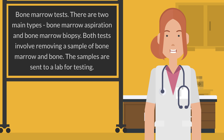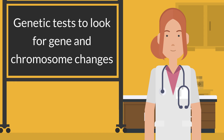Bone marrow tests include two main types: bone marrow aspiration and bone marrow biopsy. Both tests involve removing a sample of bone marrow and bone, which are sent to a lab for testing. Genetic tests are also done to look for gene and chromosome changes.